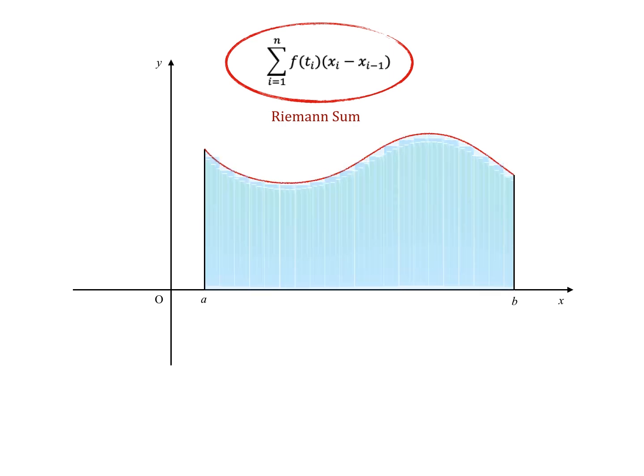If n is infinitely great, the sum of surface areas would be equal to the area under the graph.